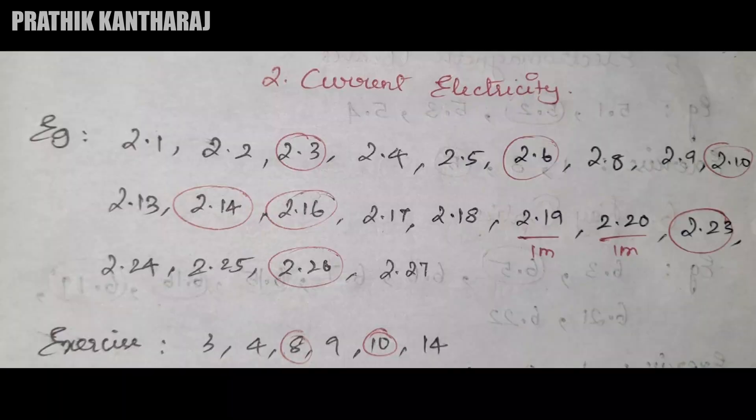In the second chapter, I am going to show you Current Electricity. Examples: 2.1, 2.2, 3, 4, 5, 6, 8, 9, 2.10, 13, 14, 16, 17, 18, 19, 20, 2.23, 24, 25. And 2.6 and 2.7. Let's talk about the examples here.